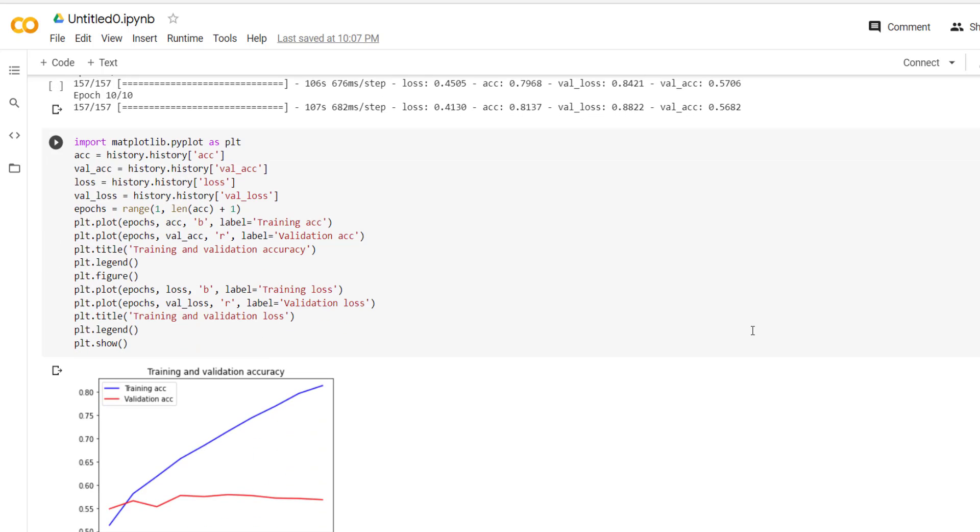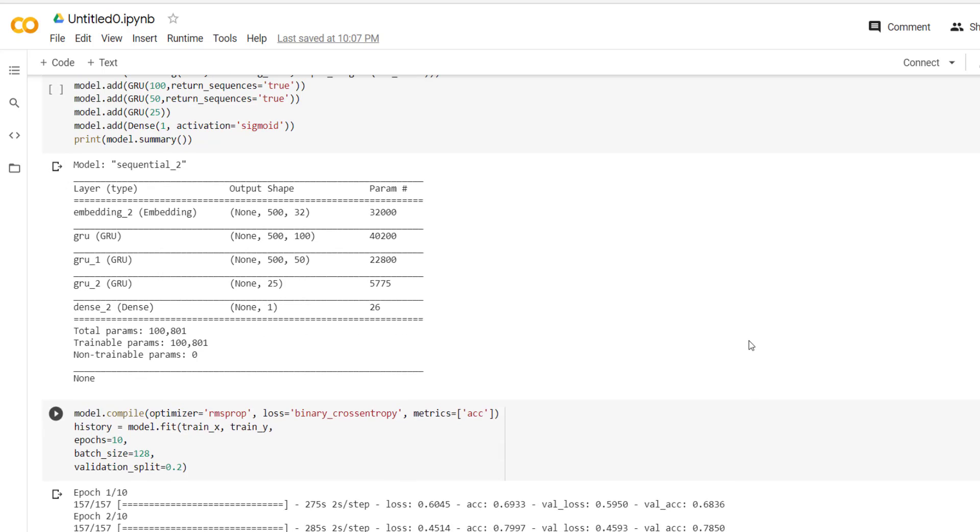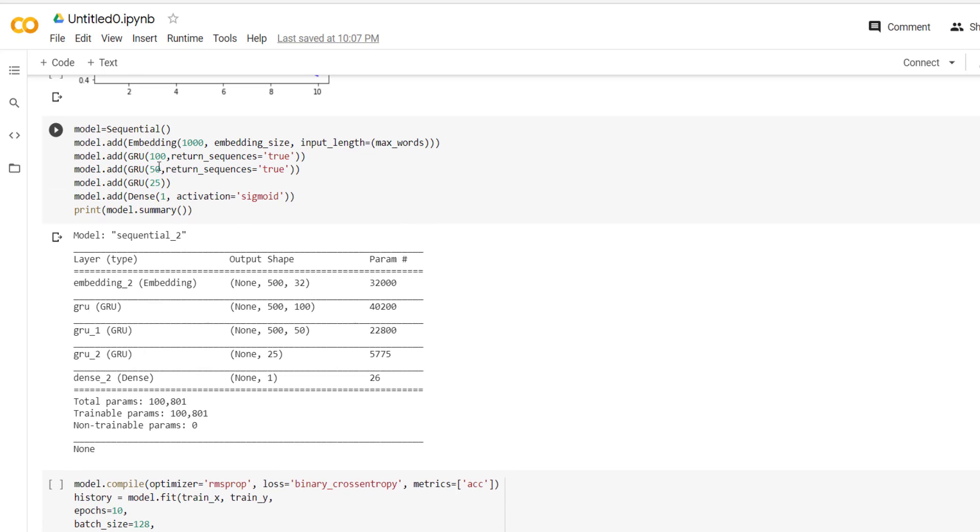Now the same model is used but with the help of GRU units. How to create GRU unit? GRU layer is present inside this. So we have to use that layer and how many units of GRU we want to use, that we have to specify over here.